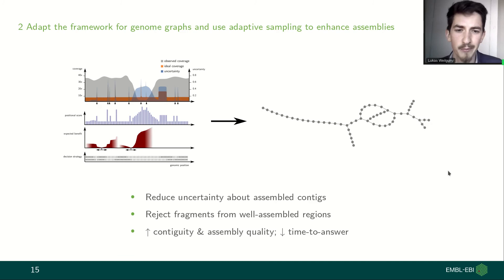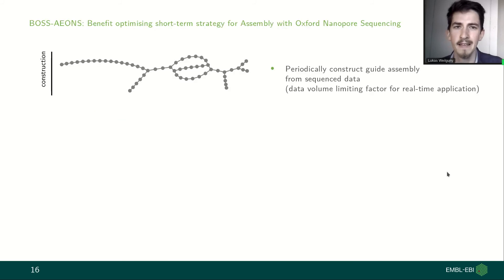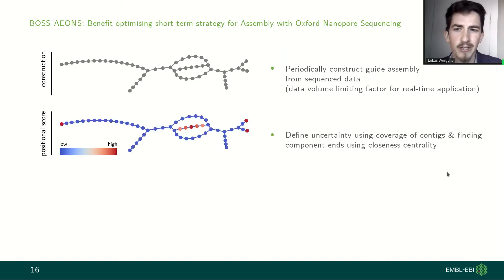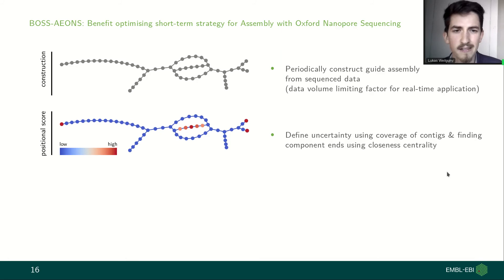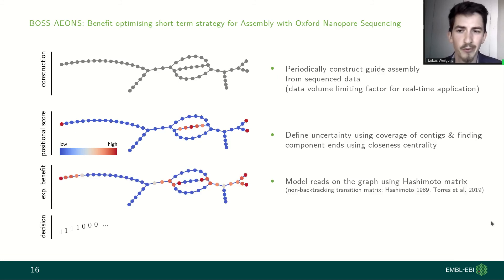We reject fragments from already well-assembled regions and therefore aim to increase contiguity and assembly quality, again decreasing time to answer. In overview: we first periodically construct a guide assembly from the sequencing data already collected, then define a positional score using the information we have about coverage of the contigs, and we find the component ends of the contigs using closeness centrality and give those a higher score. As a third step, we calculate the expected benefit of a read mapping to this genome graph by modeling reads on the graph using the Hashimoto matrix, which is a transition matrix that is not able to backtrack on itself.